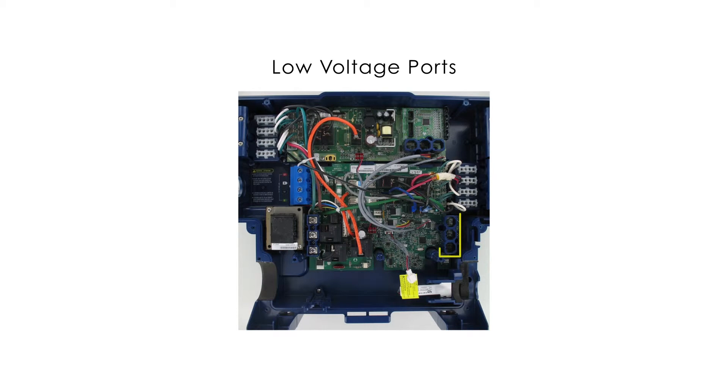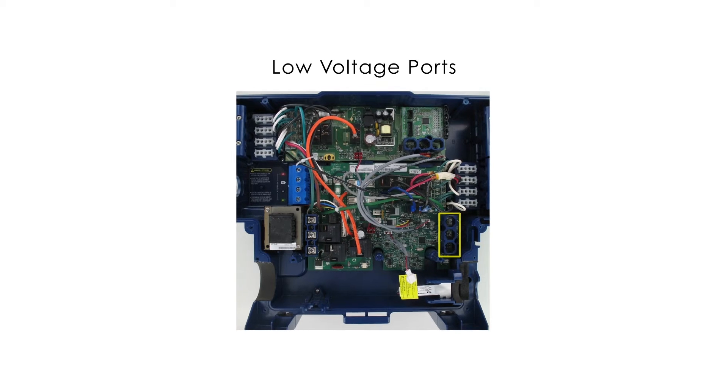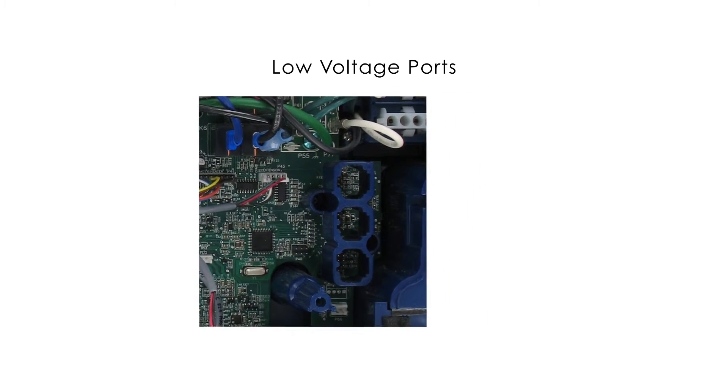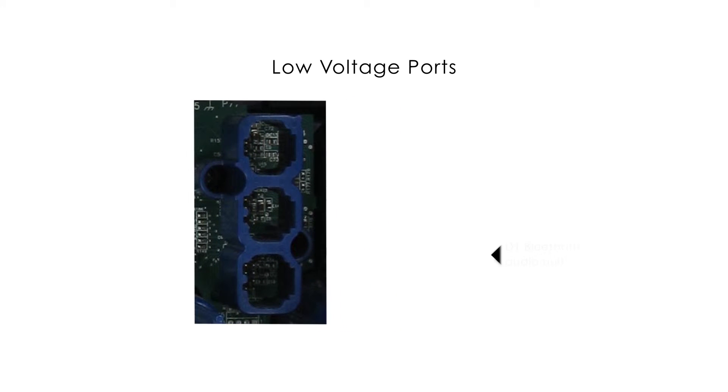The low voltage connections or data ports that are located on the bottom of the lower control will receive information from the D1 Bluetooth audio unit and the D1 Hub upper control.